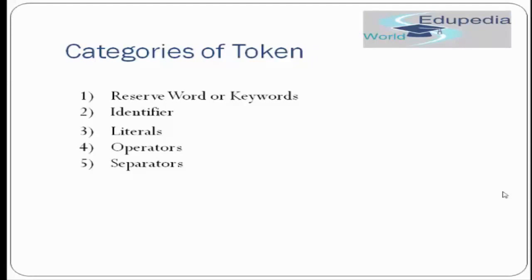Tokens are majorly divided into five categories. First are reserved words or keywords — words that Java has reserved for itself, for which the compiler has a special meaning. For example, 'break' is a keyword in Java with a predefined compiler meaning. Second are identifiers — Java tokens used by the programmer to give a name to anything in Java, including variables, classes, and methods.